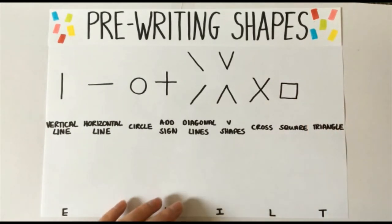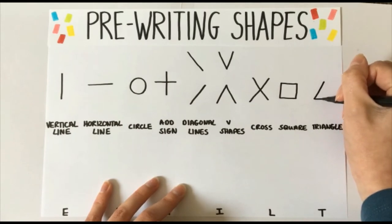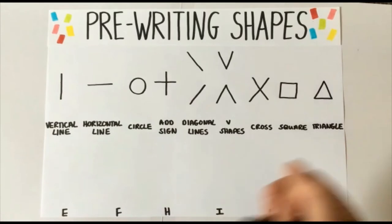Triangle. This is where we need to use our diagonal line and also our horizontal. Start at the top, go diagonal down, across and diagonal up. Well done. Next we're moving on to our letters.